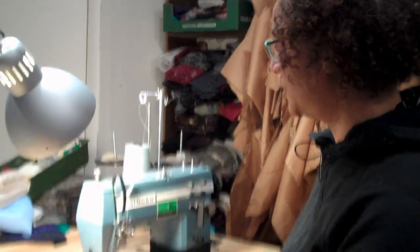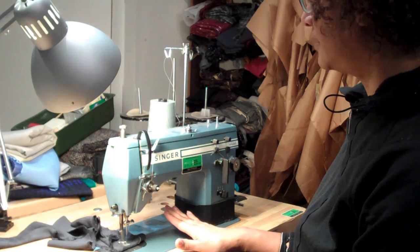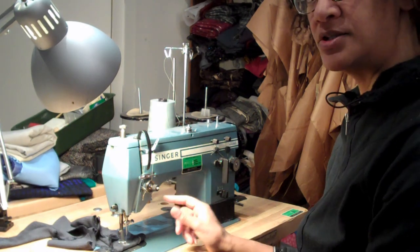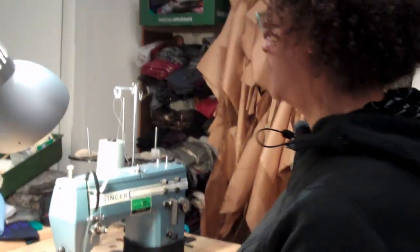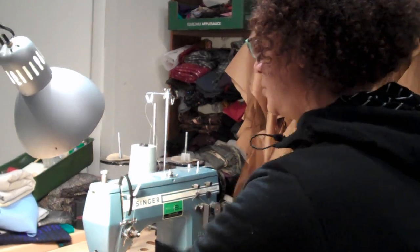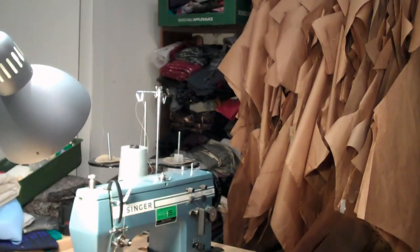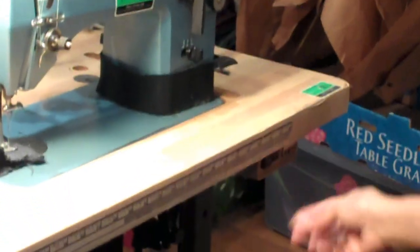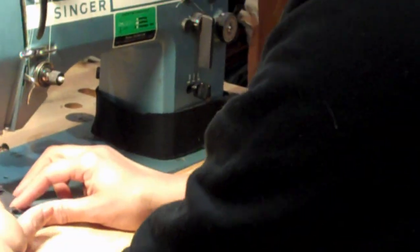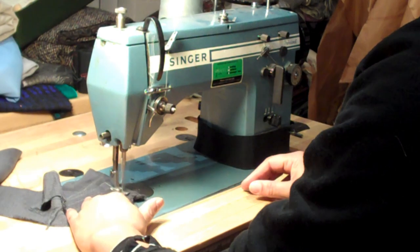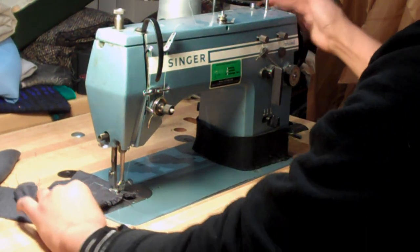So this machine can do two kinds of stitches. It can do a straight stitch, which has a switch here that's on and off. Over here. So I'm going to click it on, and it will do a straight stitch.